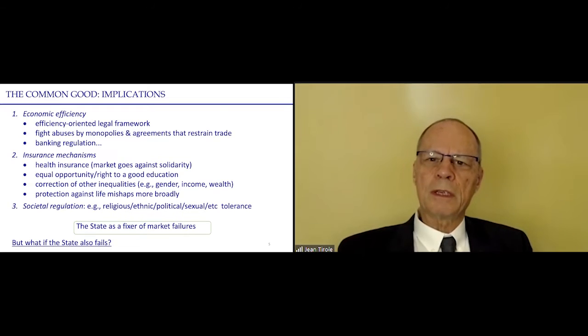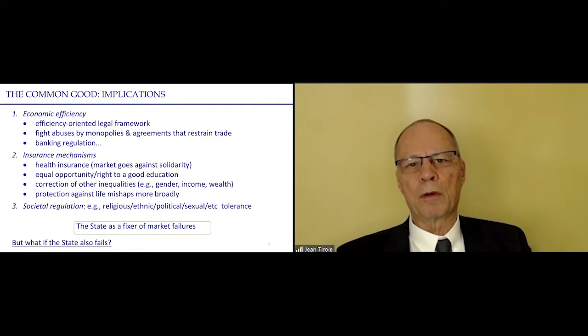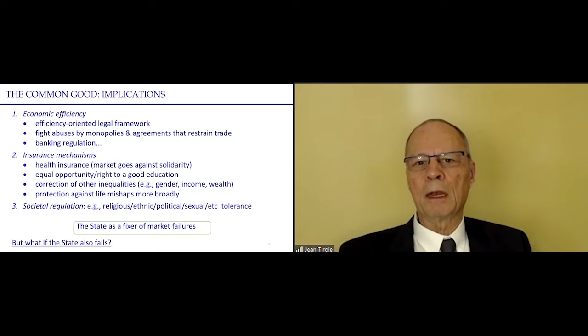We need an efficiency-oriented legal framework, for example. We need to fight abuses of dominant positions of firms. We need to regulate banks, and so on and so forth. Economic efficiency. But then, we need a set of insurance mechanisms. Beyond the veil of ignorance, we may be born in a poor family or a rich family, but we should be getting the same education—a good education for all, that equality of chances.